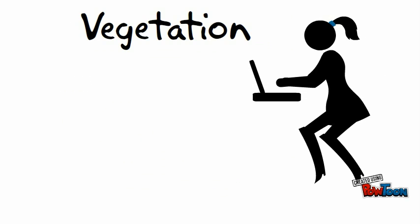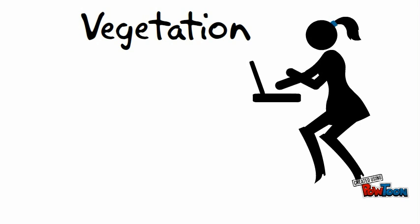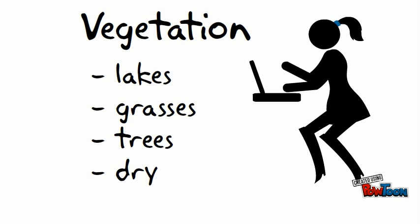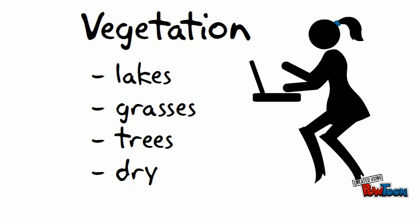Please record the following words into the blanks for the vegetation section of your flipbook. I will give you the words but not in order — I would like you to put them in the correct place. The words that you need are: lakes, grasses, trees, and dry. Please pause the video.